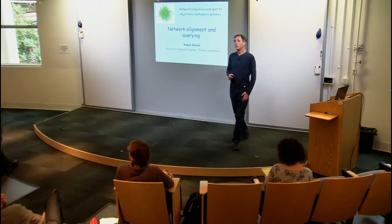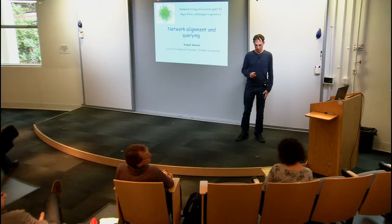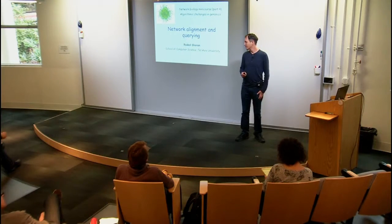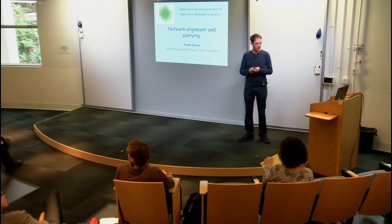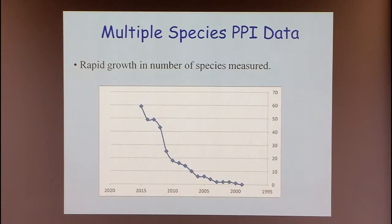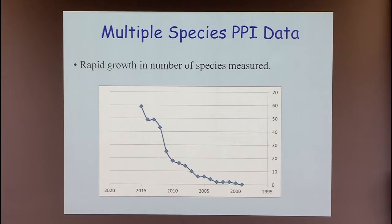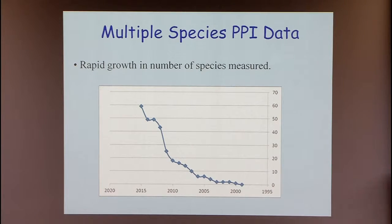I'll continue with modular identification, but this time in the prism of evolution, by integrating data from different species. The reason we think this is timely and interesting is because we've seen many graphs like this throughout the week. If we look at the number of species for which some protein interaction data has been measured, there is exponential growth, and it's probably time to start taking advantage of this.